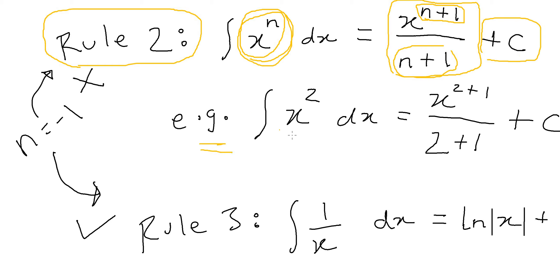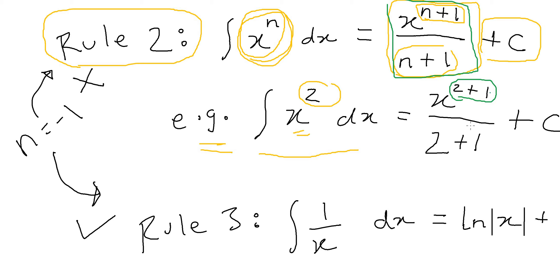When do you apply Rule 2? When you have a variable with a simple power attached to it. The rule says: add one to the power, then write that portion in the denominator — that's it. You can practice this with x to the power half or x to the power five, and look at the examples and sample quiz questions on the website.